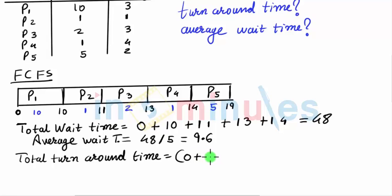For P2, the wait period was 10 added with 1. For P3, it waited till 11 added with 2. For P4, it waited till 13 added with 1.